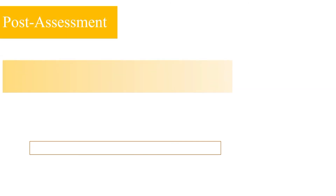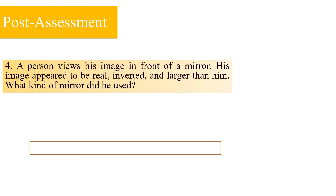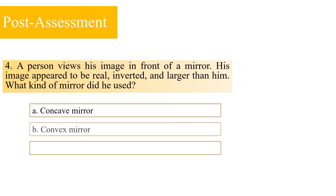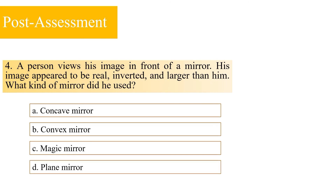Number 4: A person views his image in front of a mirror. His image appeared to be real, inverted, and larger than him. What kind of mirror did he use? Is it A: concave mirror; B: convex mirror; C: magic mirror; or D: plain mirror? The correct answer is A — a concave mirror.